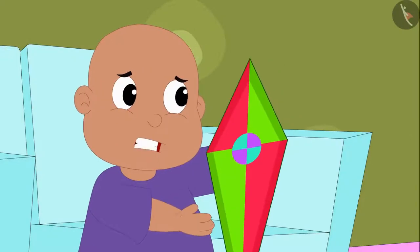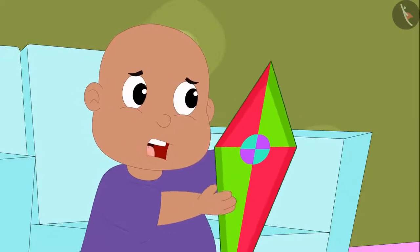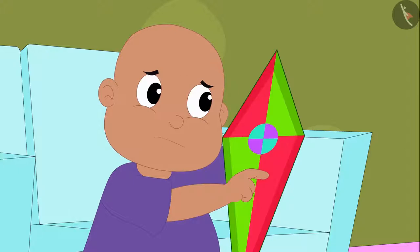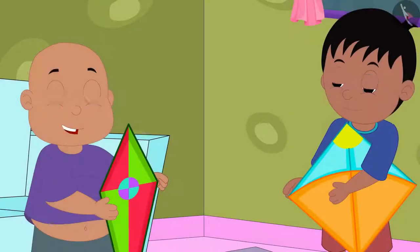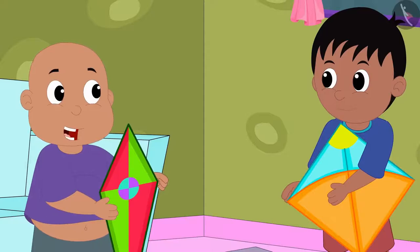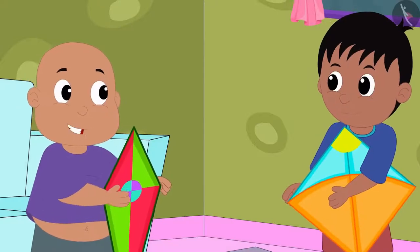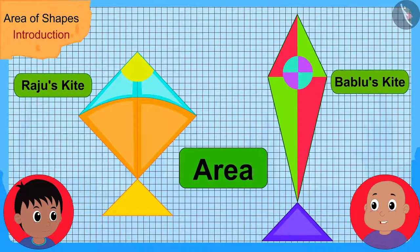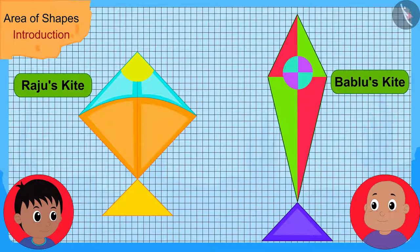Bablu told Raju, "No, my kite is bigger than your kite and more beautiful as well. Let us draw outlines of both kites on a grid paper and find their areas. The one whose kite has a larger area will have the larger kite." And then he drew outlines of the kites on a grid paper.